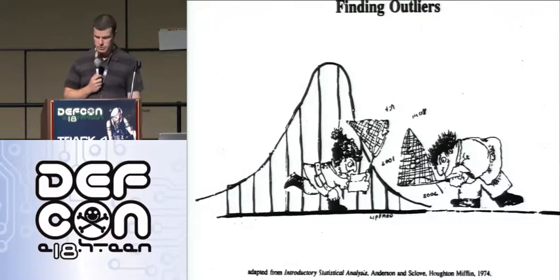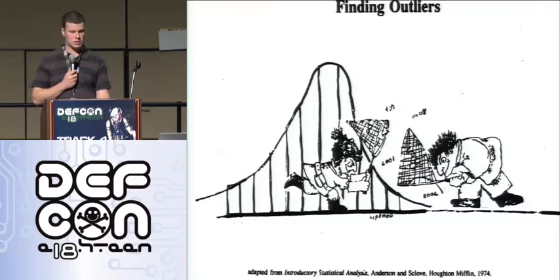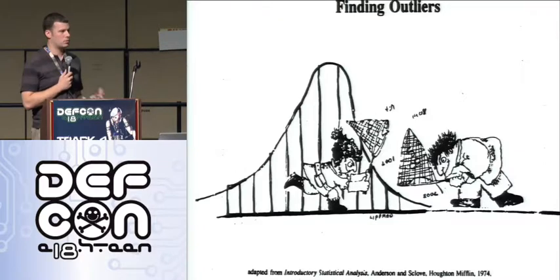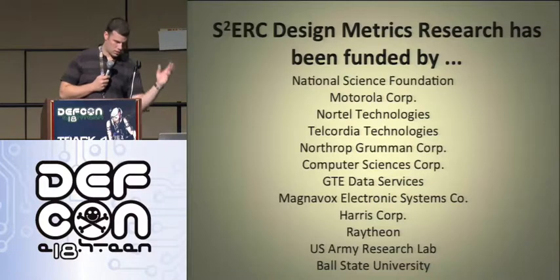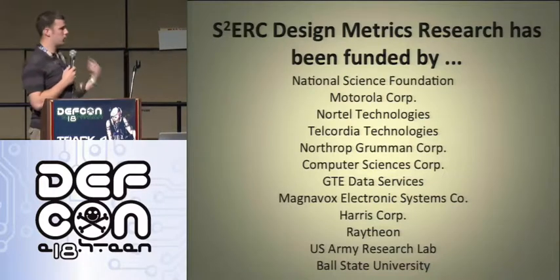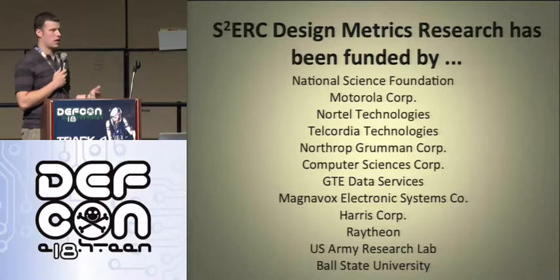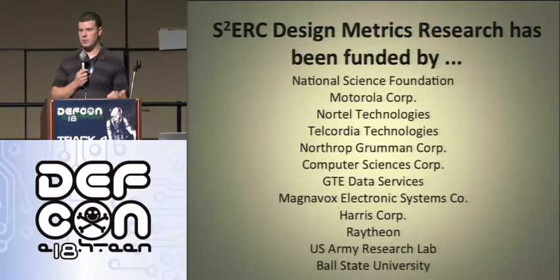We look for outliers — modules that come up as very error-prone or fault-prone. That's what we're looking for. This actual project — taking the reliability metrics and applying them to security — was funded by Army Research Labs.